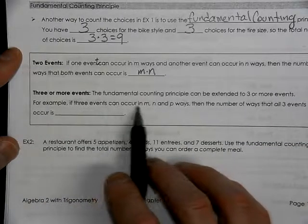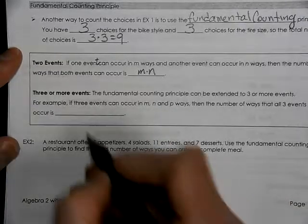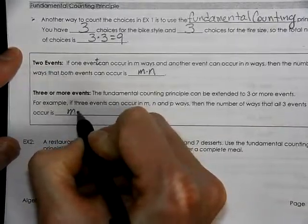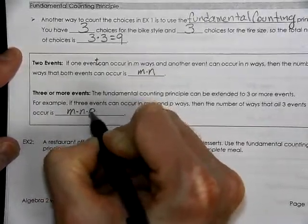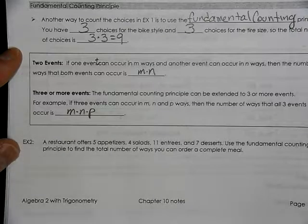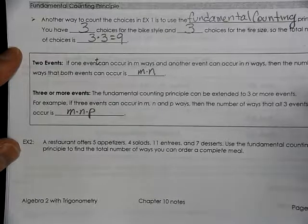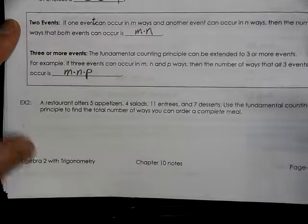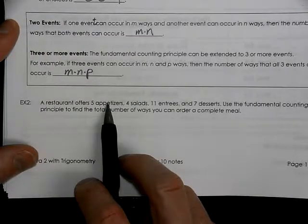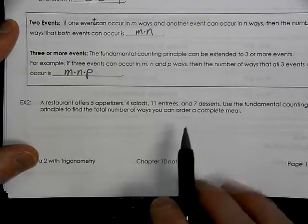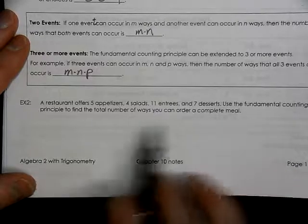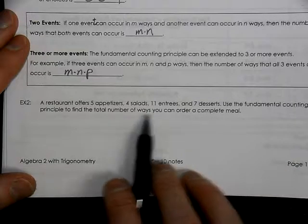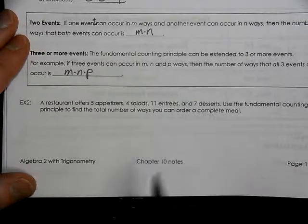If three events can occur in m, n, and p ways, then the number of ways all of those events can occur is the product of m, n, and p. For example, if you have five appetizers, four salads, eleven entrees, and seven desserts, find the total number of ways that you can order a complete meal.